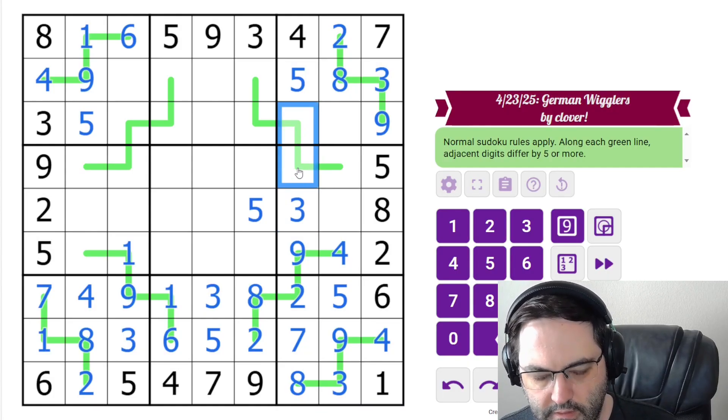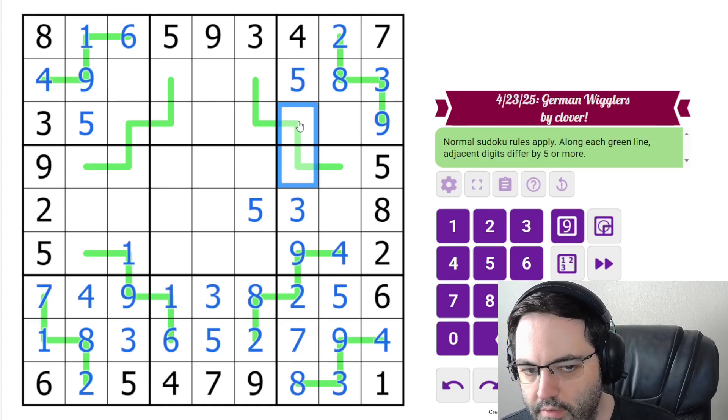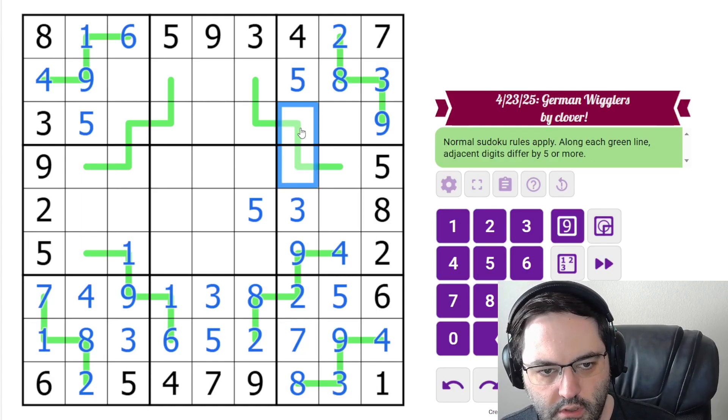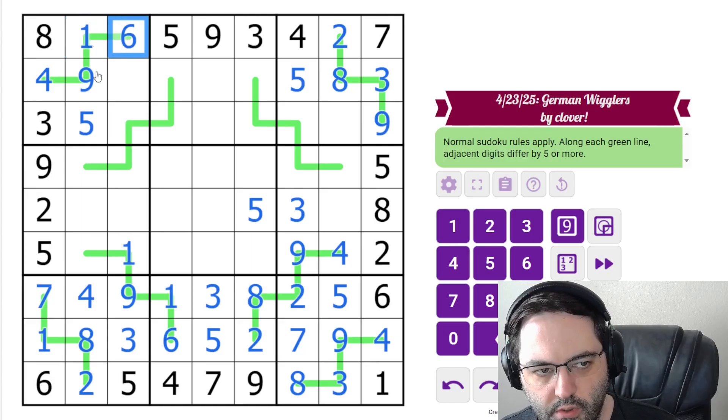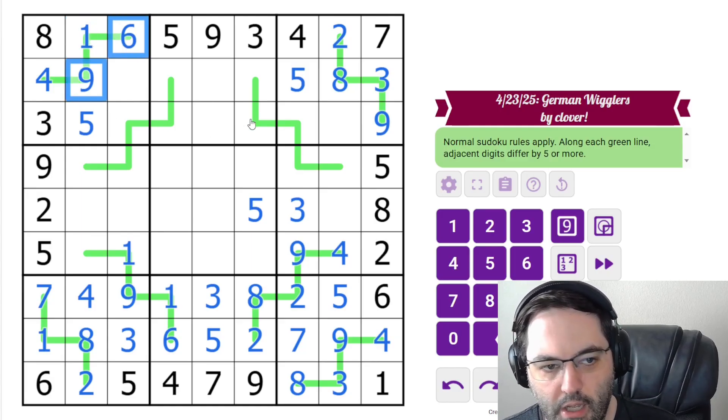So this is 1, 6. Right now they could go in any order, actually. Unlike in this situation, here we couldn't put a 6 because we would need 2 ones and those ones would be in the same box.